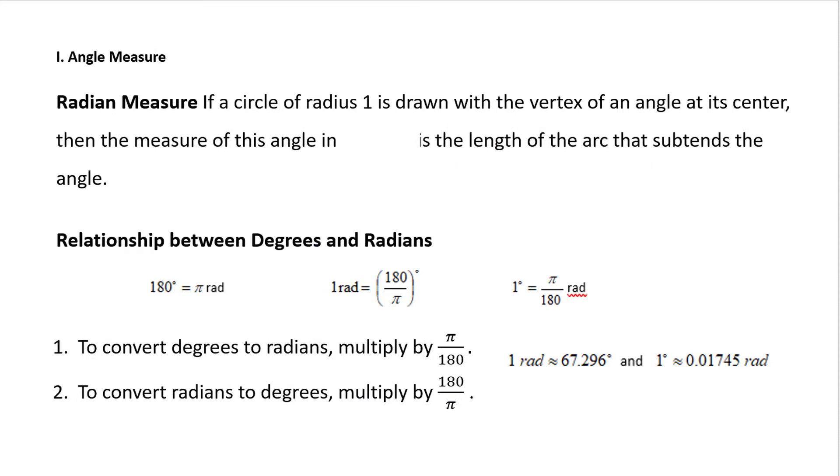Roman numeral 1. Angle measure. Radian measure. If a circle of radius 1 is drawn with the vertex of an angle at its center, then the measure of this angle in radians is the length of the arc that subtends the angle. The relationship between degrees and radians: 180 degrees equals π radians, 1 radian equals 180 divided by π degrees, and 1 degree equals π over 180 radians. Number 1. To convert degrees to radians, multiply by π over 180.